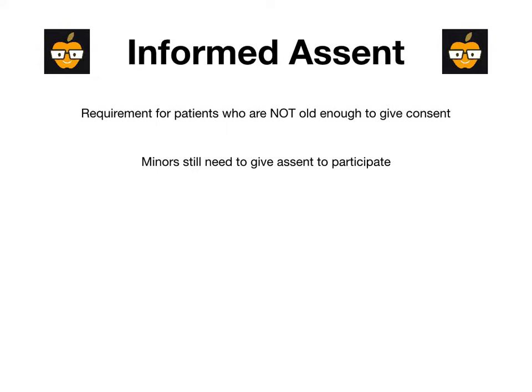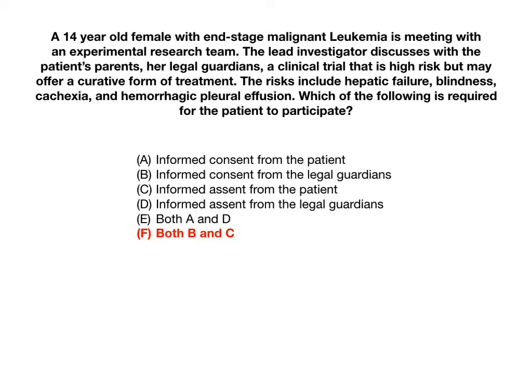This is a very important topic because there are so many different scenarios the test writer could ask about informed assent versus informed consent. When something is really high risk, you need to get the informed assent of the minor — explaining exactly what's going to happen, the risks, benefits, and alternatives. You must get the assent from the minor and the informed consent from the legal guardians. You cannot proceed with something risky unless both are obtained. This is very high yield.